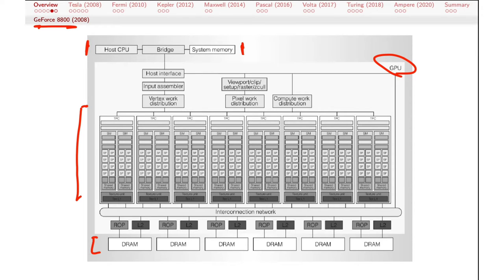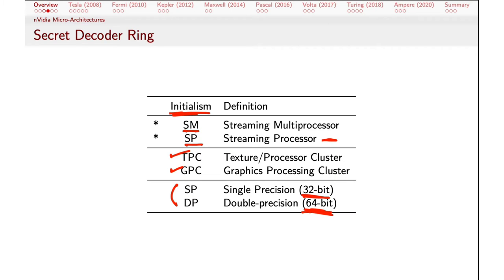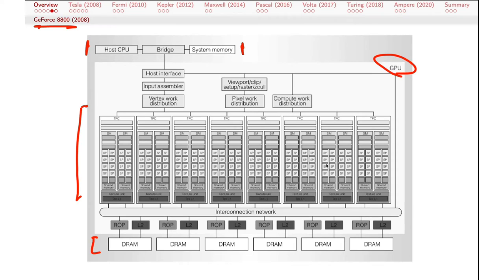In this particular chip there are eight TPCs — texture/processor clusters. We're thinking of these as processor clusters. This is a high-level grouping of the streaming multiprocessor and the streaming processor to provide a mechanism for getting multiple different parts of the chip to do different things at different times. There's quite a lot of technology involved in figuring out how to do that, and a lot of the block diagram elements up here are focused on that.